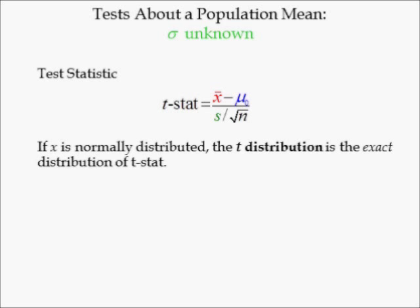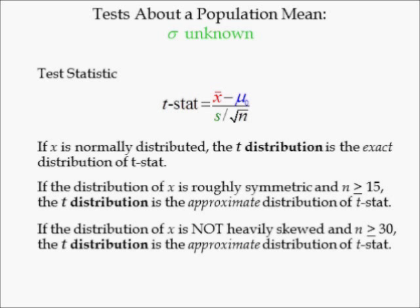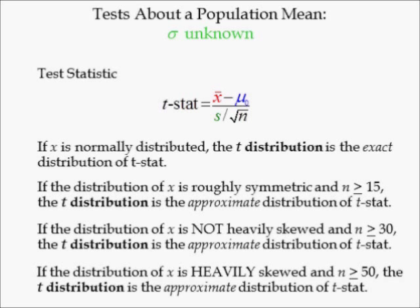If x is normally distributed, the t-distribution is the exact distribution of t-stat. If the distribution of x is roughly symmetric and its sample size is at least 15, the t-distribution is the approximate distribution of t-stat. If the distribution of x is not heavily skewed and its sample size is at least 30, the t-distribution is also the approximate distribution of t-stat.